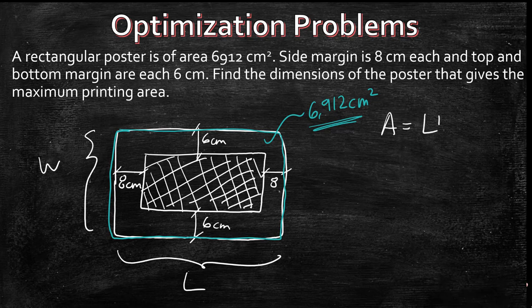So let's start this. We know let's assume that this is W and this is L. So we know area is length times width. In this case, it's equal to 6912. But we also know that since we don't have all the information here, we can use this printing area to our advantage.